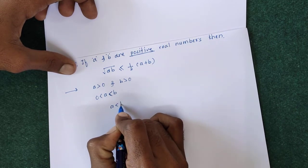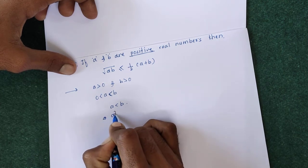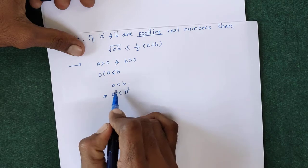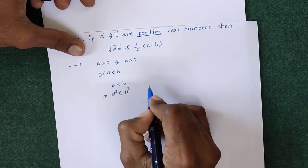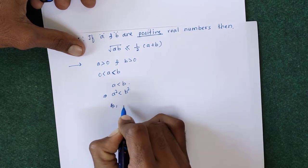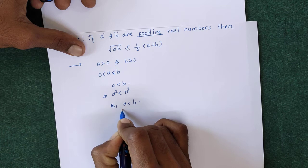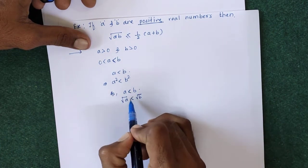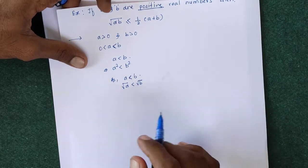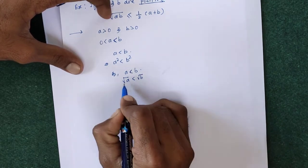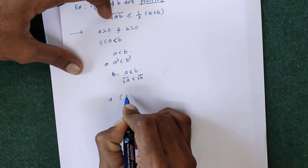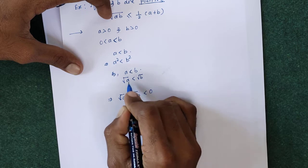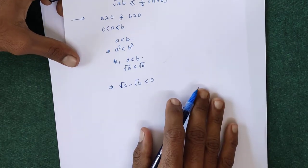A < B implies A² < B². If we square a positive number, the square is again a positive number, so A² < B². Similarly, if we take the square root, √A < √B. So A < B implies √A < √B. Rearranging, √A − √B < 0.